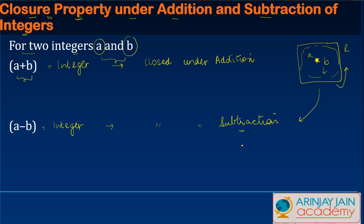But if the result lies outside this box — the box of integers — we say that they are not closed under subtraction. So let's look at a few examples.